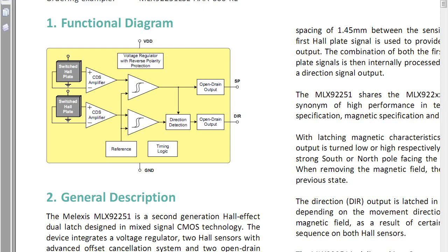This is the MLX90251. It's made by a company called Melexis. I believe they're in Belgium. This device is interesting in that it has two switched Hall plates. Its output, when used with motors and the proper magnets, can tell you the speed and direction of a motor. It is a little four pin device.